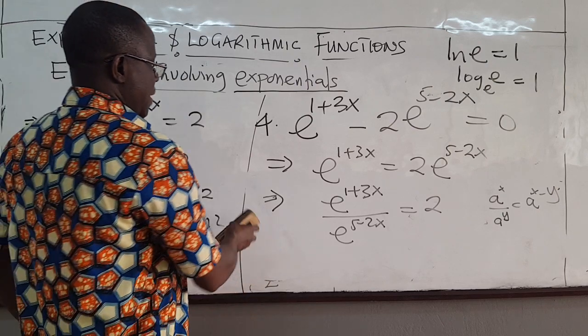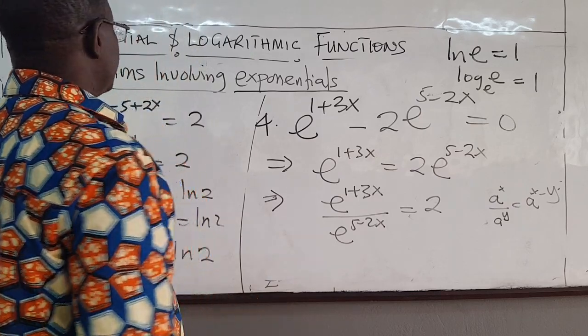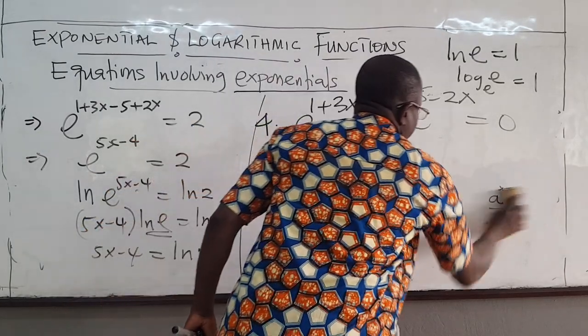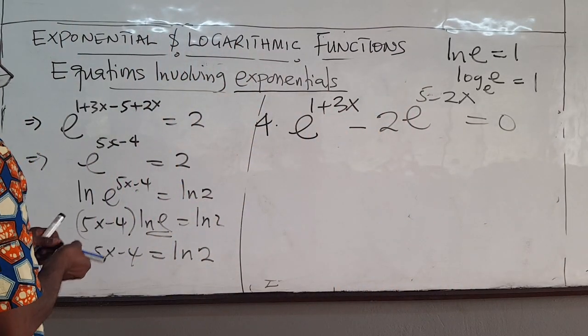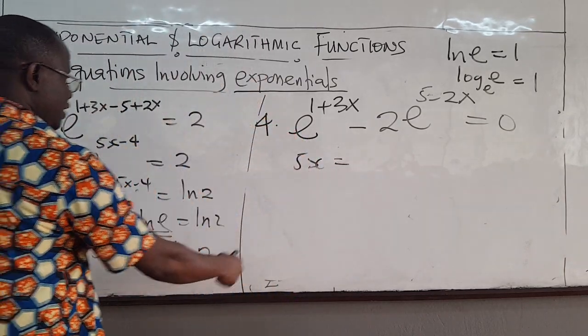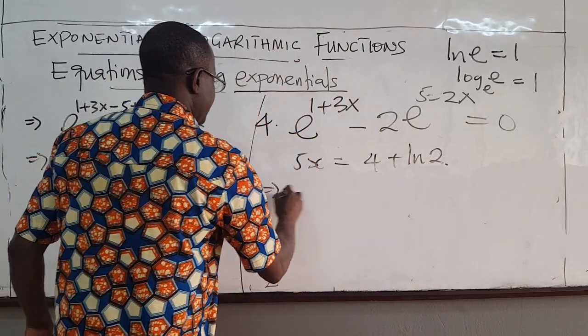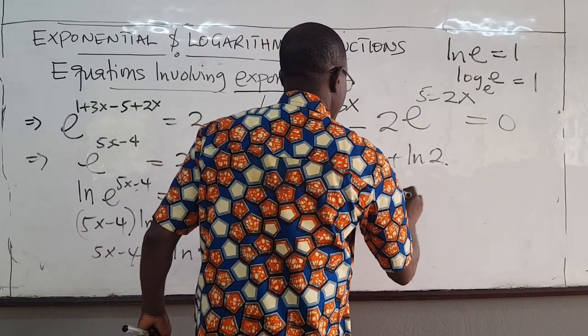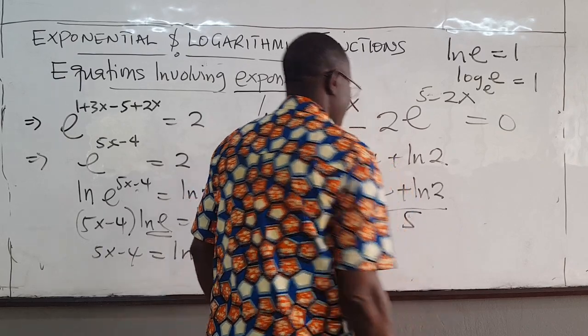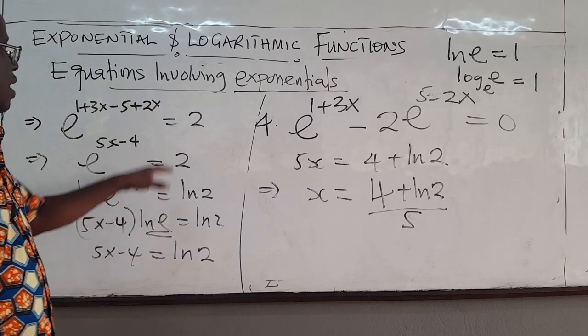So finally, I'll get rid of this. Let me get rid of this, we don't need that. Then, so 5x equals 4 plus ln(2). Divide by 5. So x is (4 + ln(2))/5, and that is the answer. That's the solution to the problem.